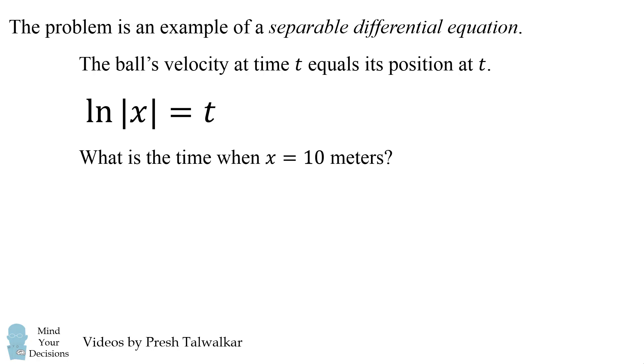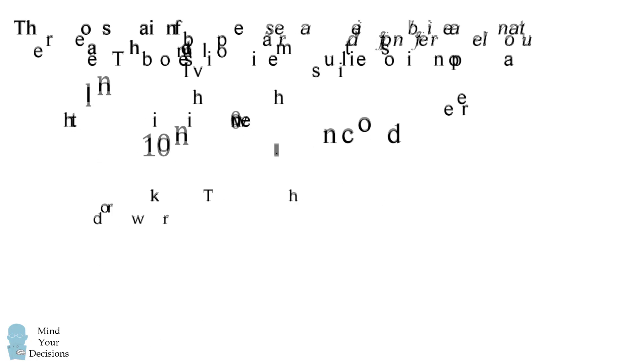What is the time when x equals 10? Well, we substitute in x equals 10 and its time will be the natural log of 10, which is approximately 2.3 seconds. And that's our answer. Did you figure it out? Thanks for watching this video.